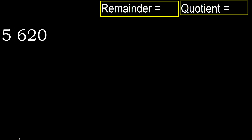620 divided by 5. 6 is not less, therefore start with 6. 5 multiplied by which number is nearest to 6 but not greater? 5 multiplied by 2 is 10, which is greater. Multiplied by 1 is 5, it is not greater. Subtract: 6 minus 5 is 1. Next,